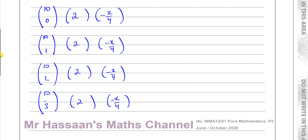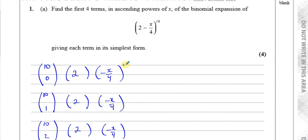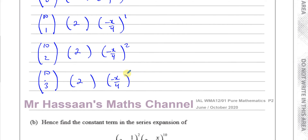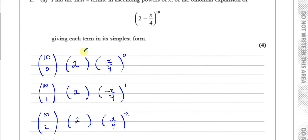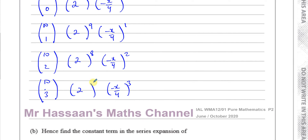If you want ascending powers of x, that means the x power has to start from the lowest and get higher: 0, 1, 2, and then 3. And the power of 2 has to start from the highest, which is 10, then decrease: 10, 9, 8, 7. You'll notice these always have to add up to 10. So that's basically the setup ready for us to get our answer.